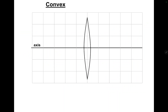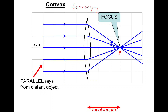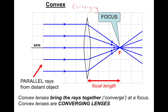So what does a convex lens do to light? If you shine light in parallel to the lens, the light will refract and it will converge. So a convex lens is also called a converging lens. The rays refract to a point that we call the focus point. The distance between the lens and the focus point is called the focal length. So convex lenses bring rays together — they converge at a focus, and are therefore converging lenses.